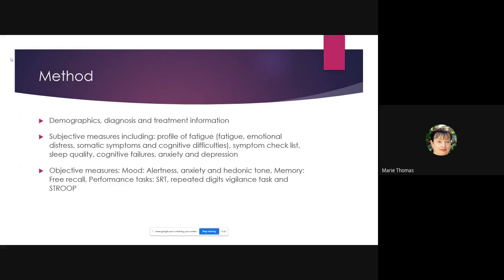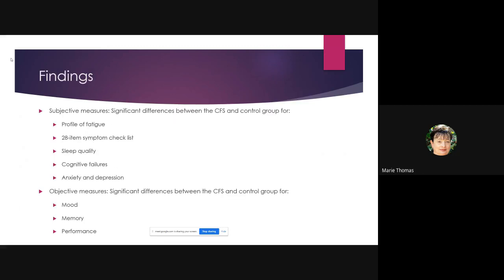On the subjective measures, there were significant differences between the chronic fatigue group and controls on fatigue, symptom checklist, sleep quality, cognitive failures, and anxiety and depression. On objective measures, there were significant differences in mood, memory, and performance. People with chronic fatigue were talking about forgetting things, not remembering phone numbers, not being able to concentrate on a book — reading the same passage over and over and losing the plot lines of films.